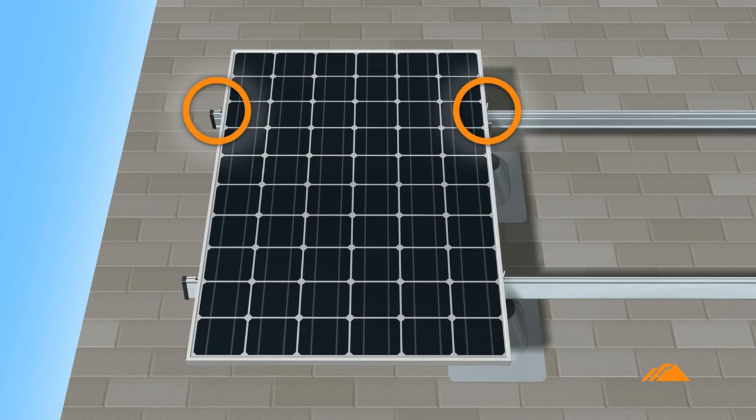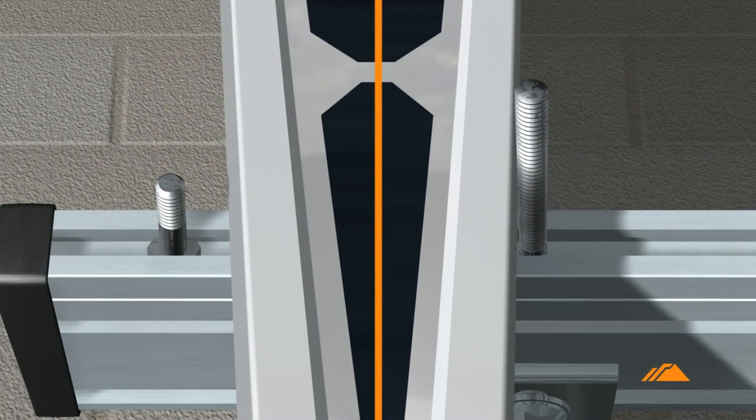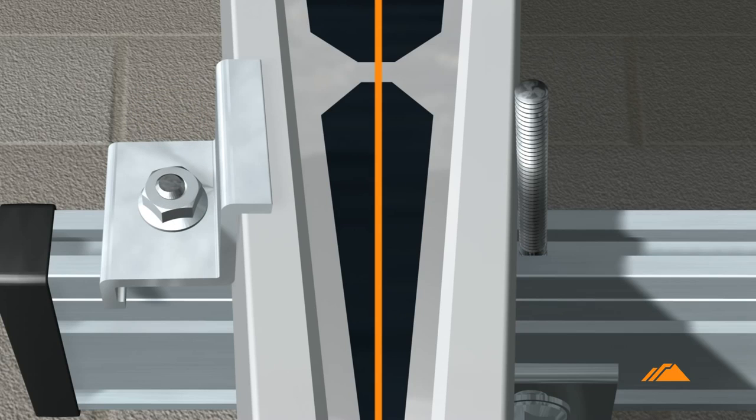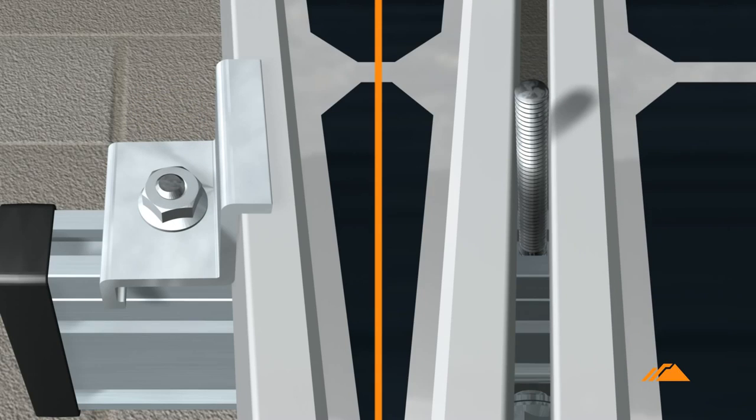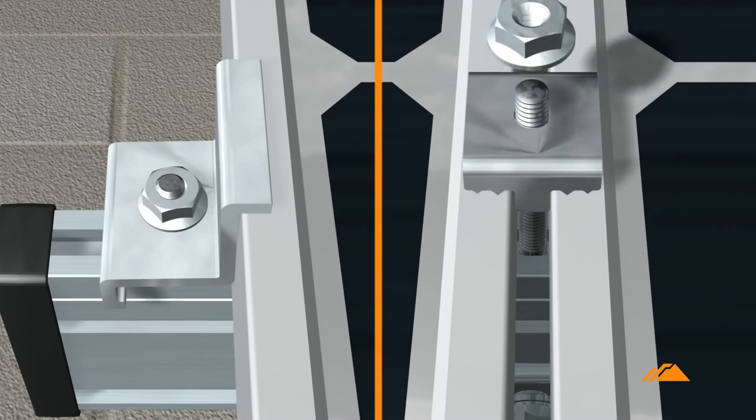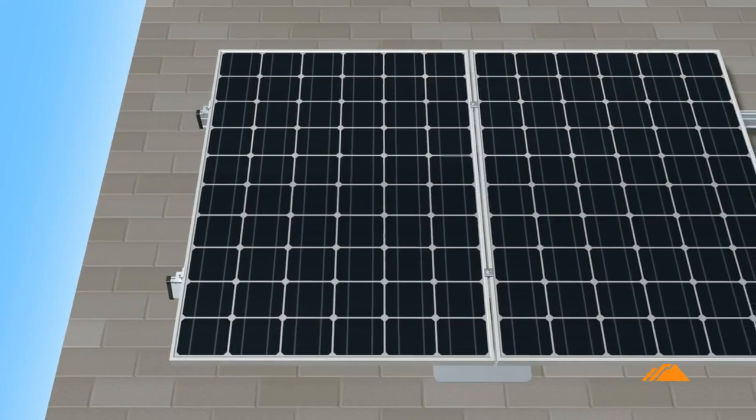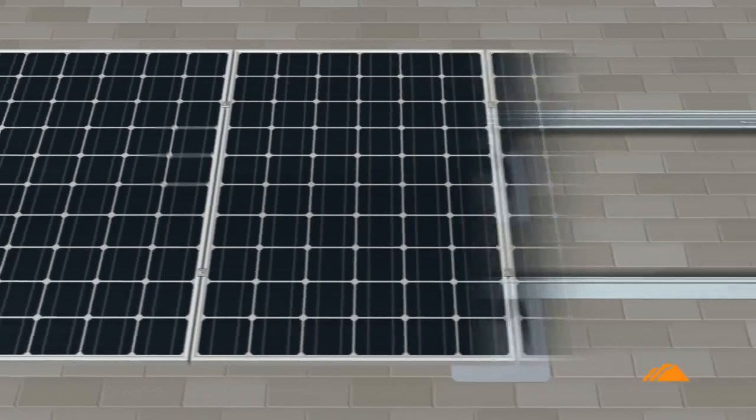Install the modules and clamps, starting with two end clamps on the first module. Then grounding mid-clamps for each additional module until completing the row with two more end clamps.